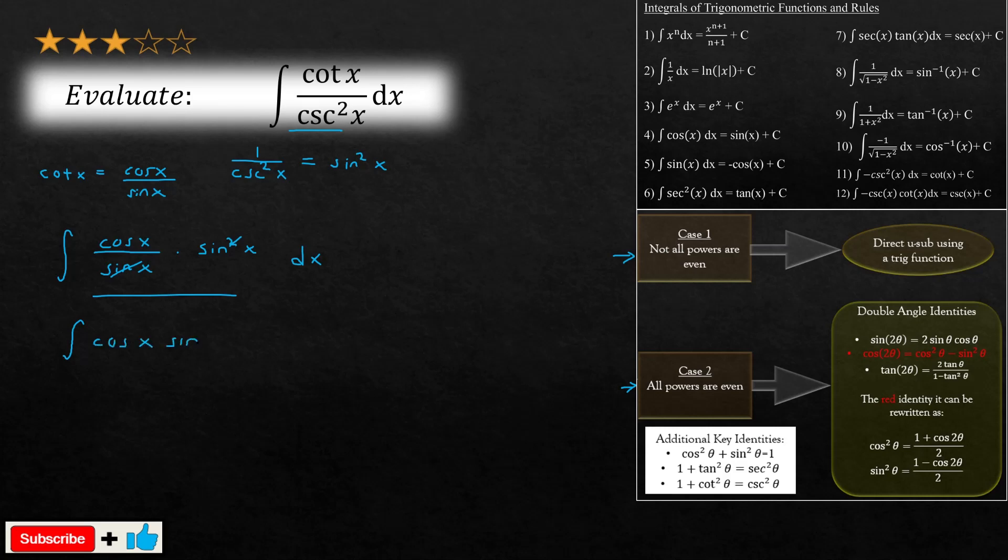And you guessed it, you just need to apply a simple u-sub because now we have a case one. Not all powers are even - we got power of one and power of one, so therefore direct u-sub using a trig function. You're going to take the u-sub as sine, so u is equal to sine of x.